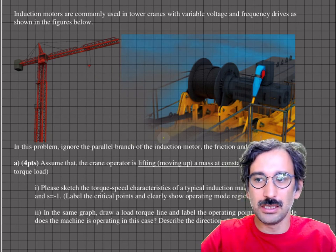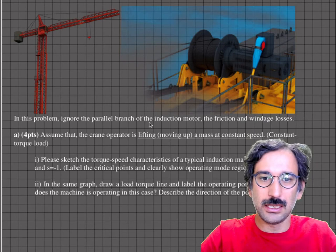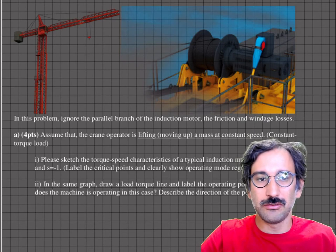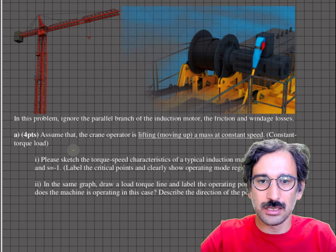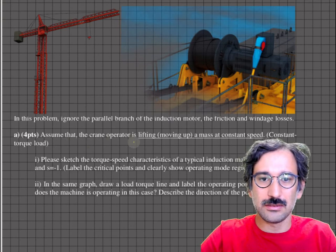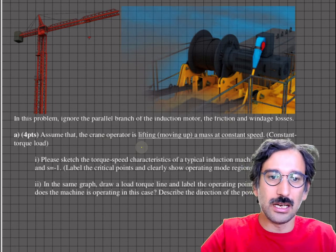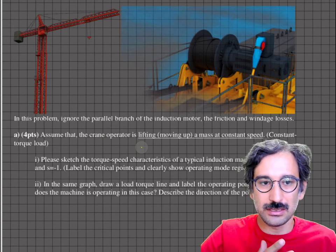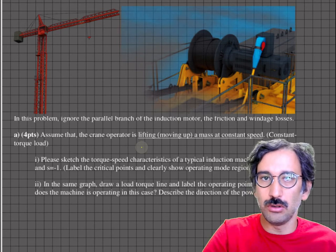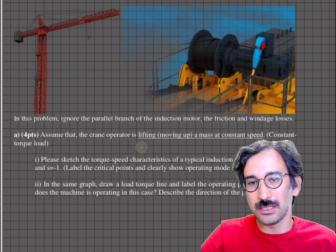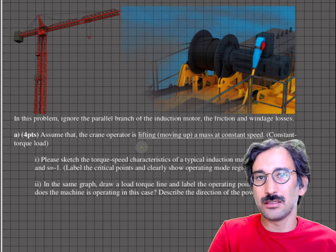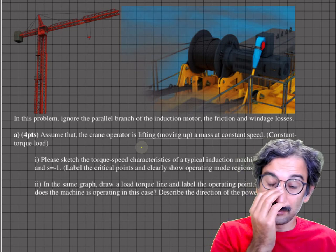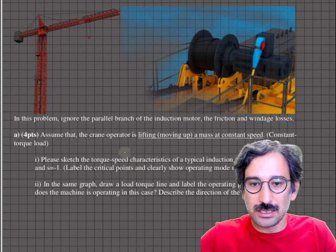In this problem we will ignore the parallel branch of the induction motor in the equivalent circuit, and there are no friction and windage losses. In the first part, assume that the crane operator is moving the load upward at a constant speed. This means it is a constant torque load from the point of view of the induction motor, operating at constant speed.